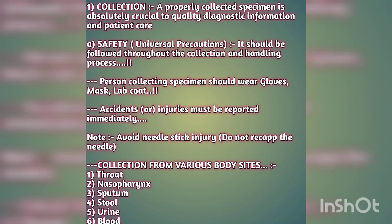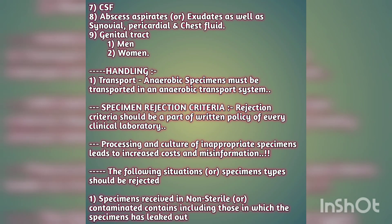For stool, we collect for different types of examination including Helicobacter pylori, rotavirus, adenovirus, and Entamoeba histolytica. For urine, we have random urine examination and urine culture. For blood, we collect for biochemistry, hormones, and serology. For cerebrospinal fluid, it is only collected by the physician — not the lab technician — and one critical point is that CSF should never be refrigerated.